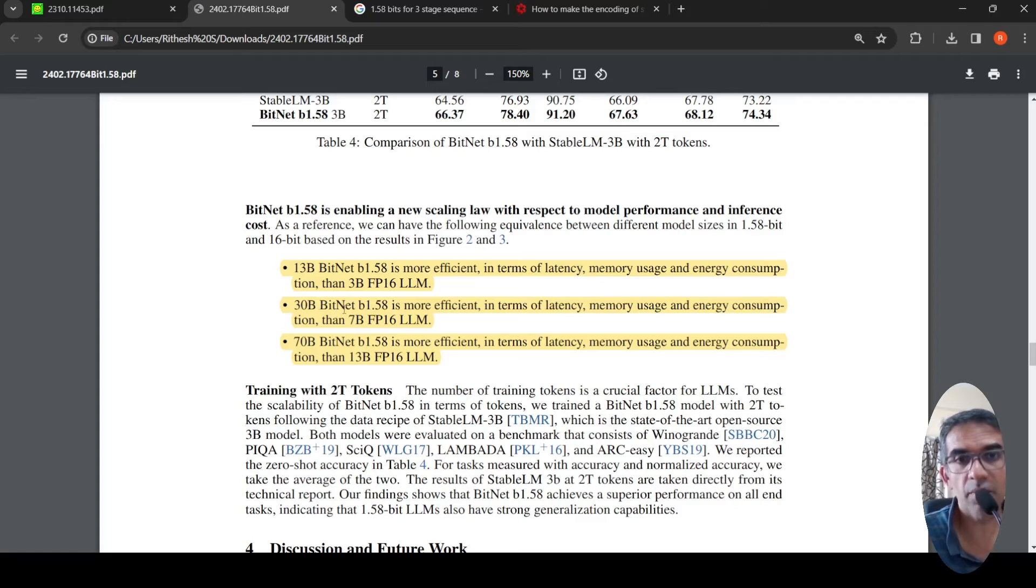So 30 billion parameter bit net B1.58 is more efficient in terms of latency, memory usage and energy consumption than a 7 billion parameter floating point 16 LLM. Similarly, 17 billion parameter bit net is more efficient than a 13 billion parameter floating point 16 LLM. So you can increase the capacity of your 1 bit or 1.5 bit transformer, this kind of a model, while also saving on latency, memory usage and energy consumption when compared to your normal floating point 16 large language models.